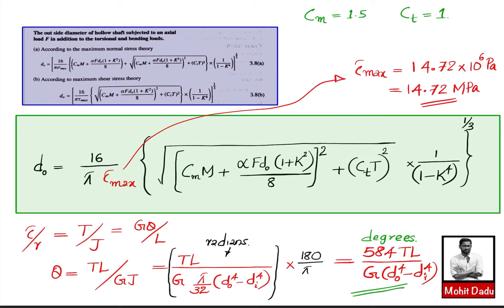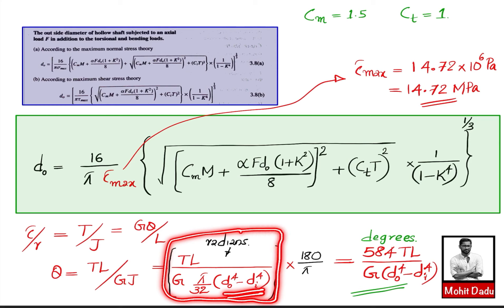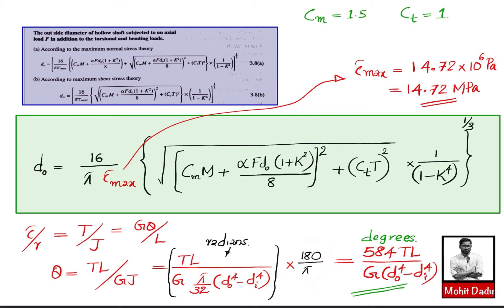For the second part, we find the angle of twist. Using the basic torsion equation τ/r = T/J = Gθ/L, the angle of twist is θ = TL / (GJ), where J is the polar moment of inertia. For a hollow shaft, J = (π/32)(d_outer⁴ - d_inner⁴). Converting to degrees, this simplifies to θ = 584TL / (G(d_outer⁴ - d_inner⁴)).